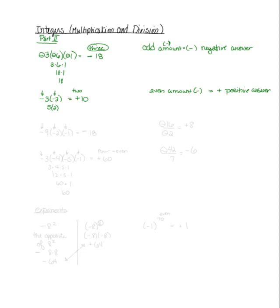Let me put a couple more on here. What if I had negative nine times negative two times negative one? How many signs do I count? One, two, three — so there are three. Three is odd, so it's going to give me a negative answer. Nine times two is eighteen, times one gives me eighteen. The answers aren't always going to be negative eighteen, by the way — it just happened to be that way.